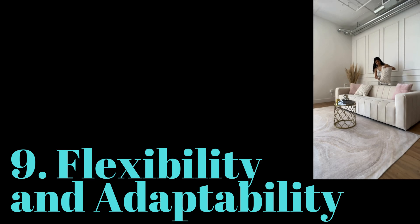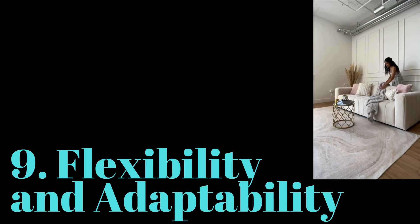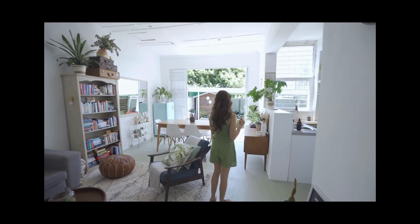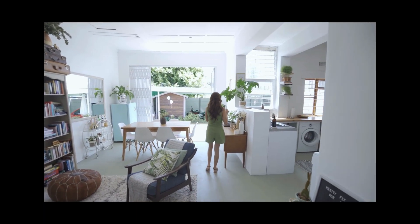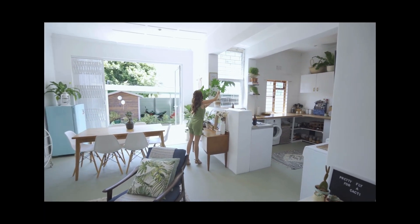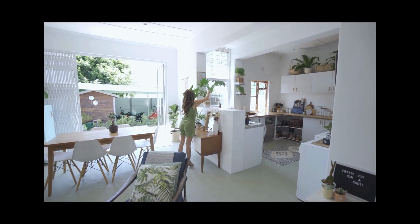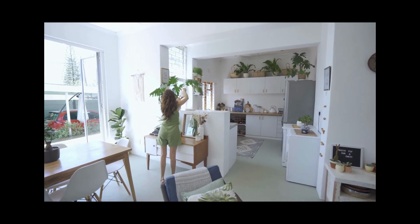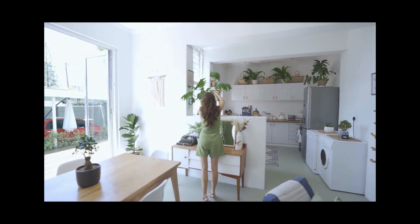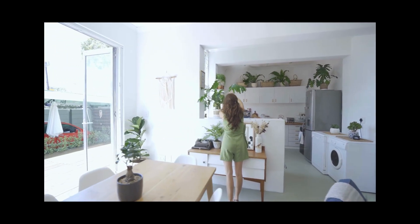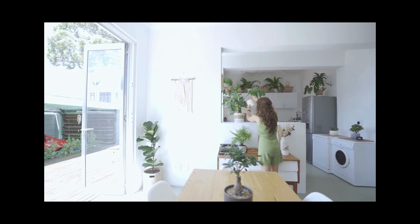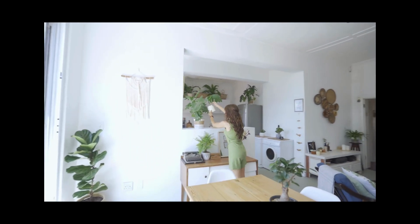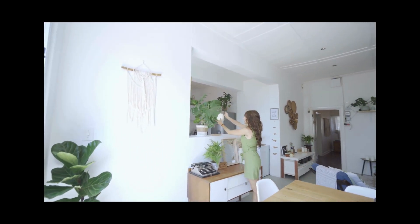Number nine is Flexibility and Adaptability. Design the home to be flexible and adaptable to accommodate changing needs and lifestyles over time. Incorporate features such as convertible spaces, modular furniture, and adaptable infrastructure to allow for future modifications and expansions.